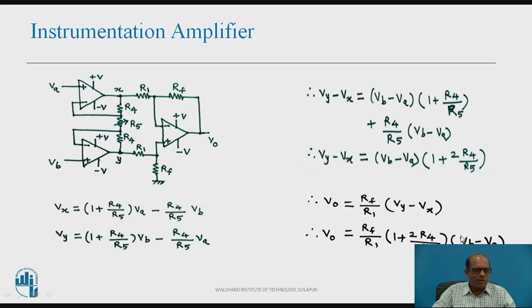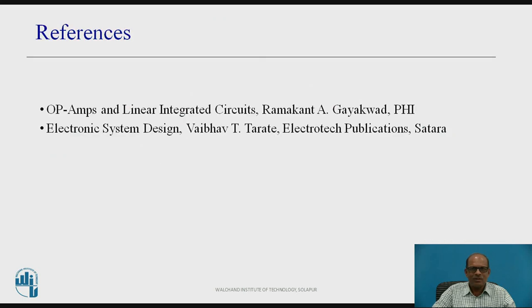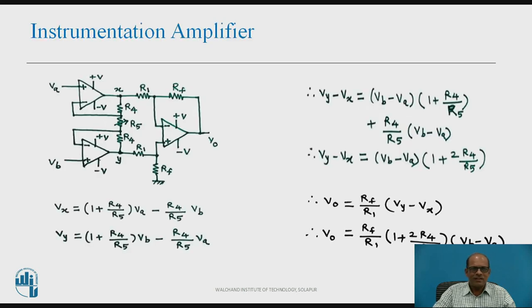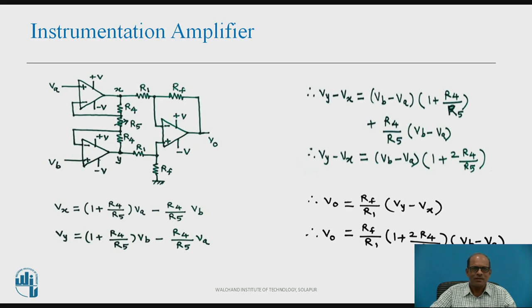By looking at the final equation, we can see that we can design the values of R1, Rf, R4, and R5 for the required gain of the signal conditioning circuit — that is, the instrumentation amplifier. This circuit can be used for designing a signal conditioning circuit as per requirement. R5 is made variable to adjust the gain.